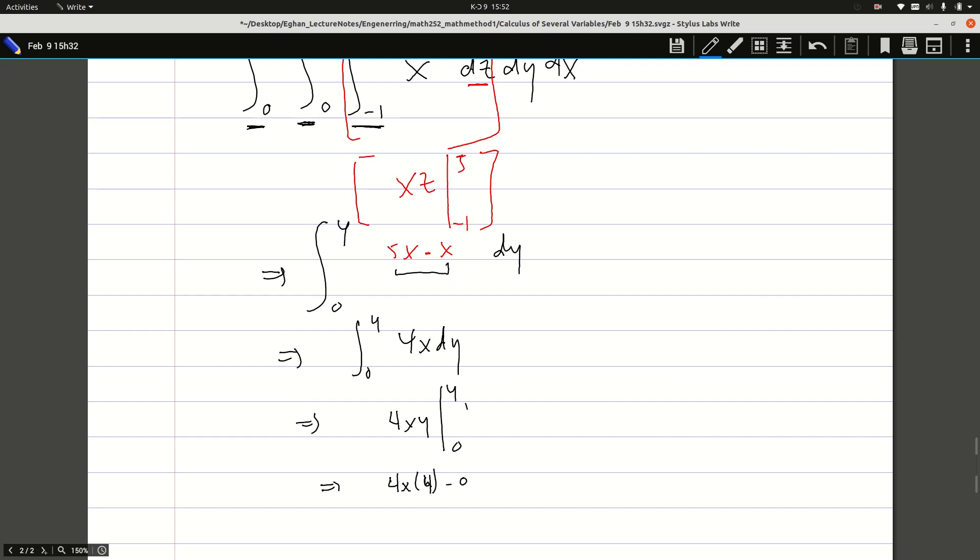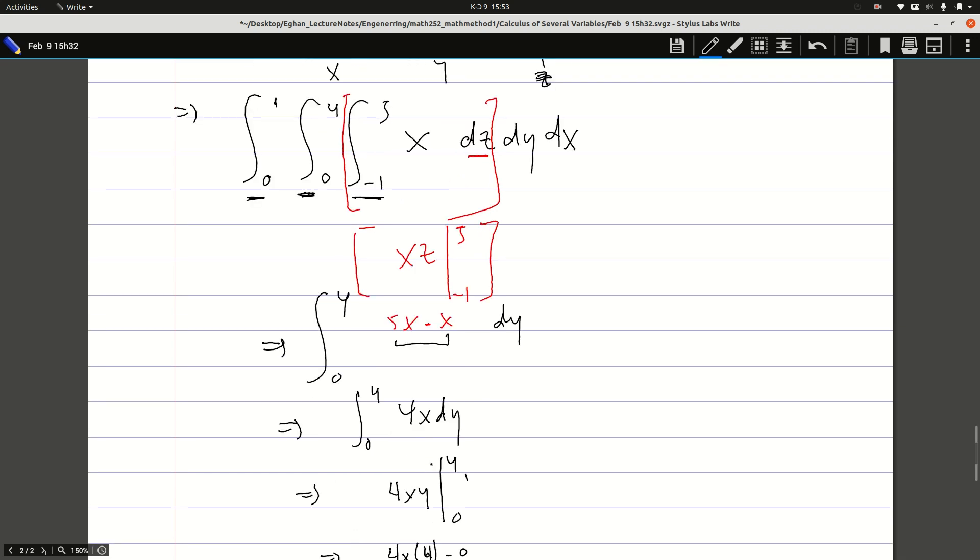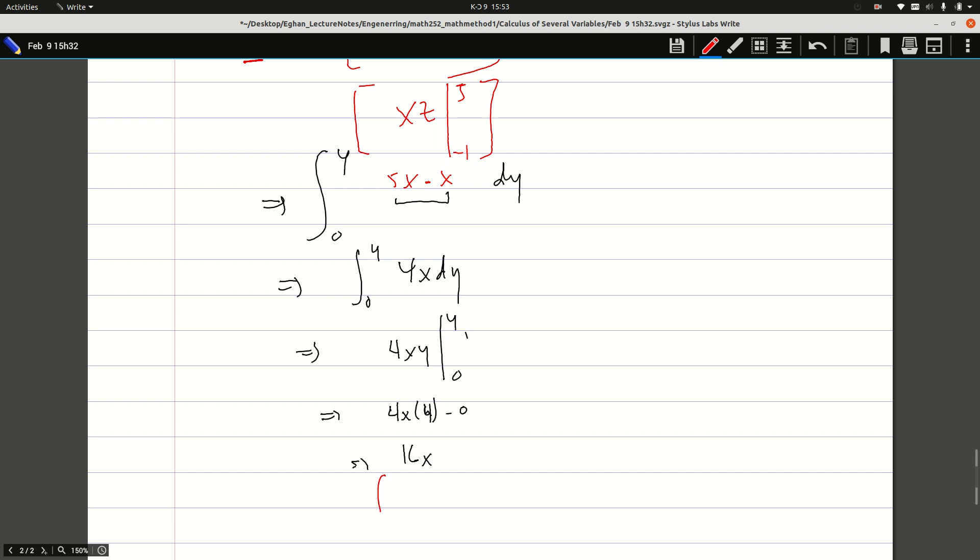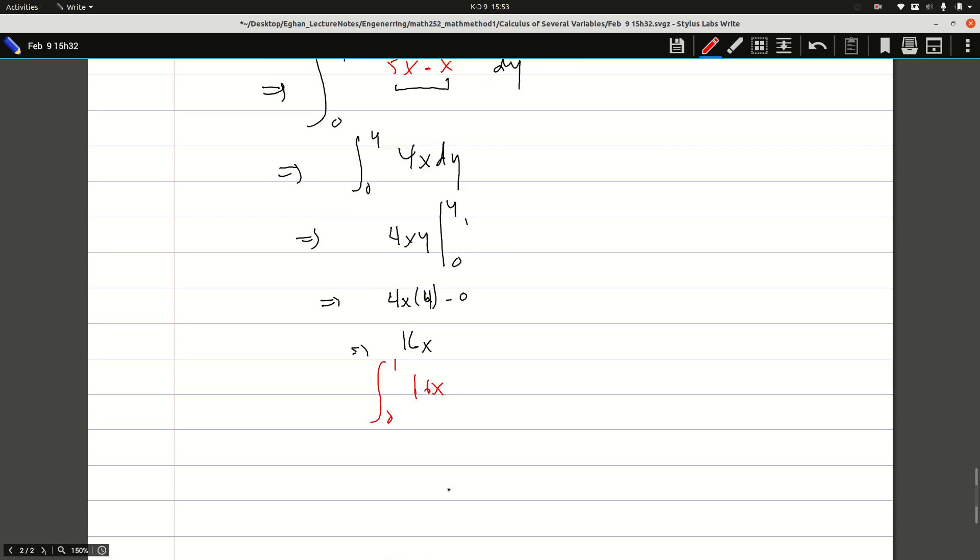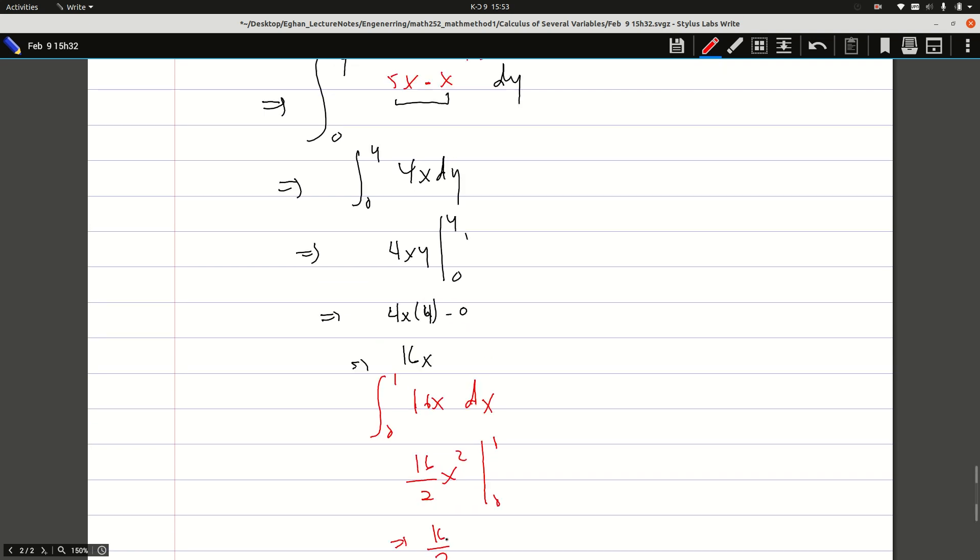I'm not done. I have to take the last integral, the outer integral over the final answer. So I have the integral from 0 to 1 of 16x dx. This is 16/2 times x² from 0 to 1, which equals 8. This is a simple illustration of a triple integral.